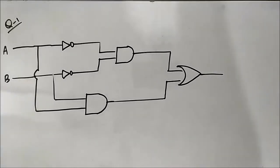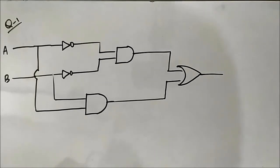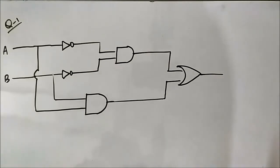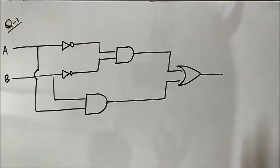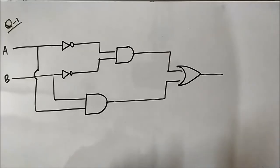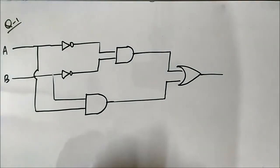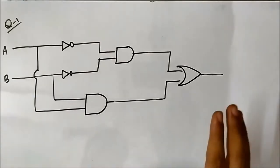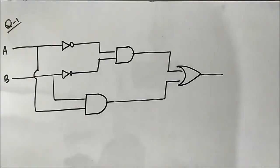Welcome to engineering tutorial. Today we are going to resume our discussion on digital electronics. So far we have discussed designing logic circuits from boolean expressions using basic logic gates — AND, OR, inverter — and also using universal logic gates, NAND and NOR. In this video we are going to discuss the opposite concept: we will be given a logic circuit with input values and we have to determine the boolean output expression.